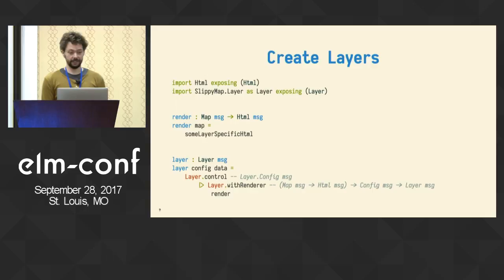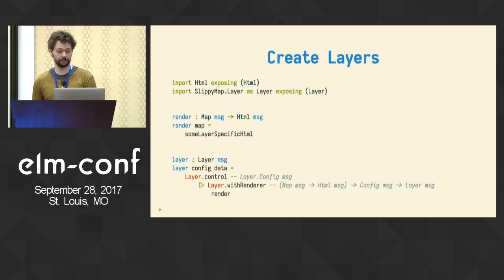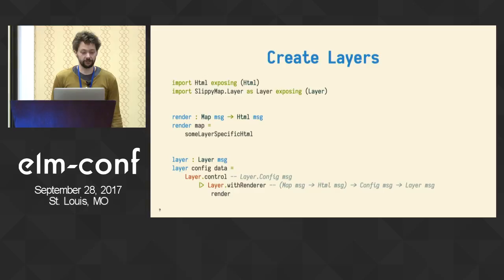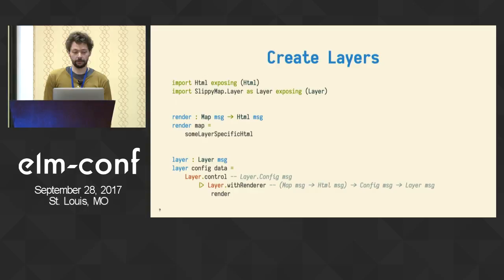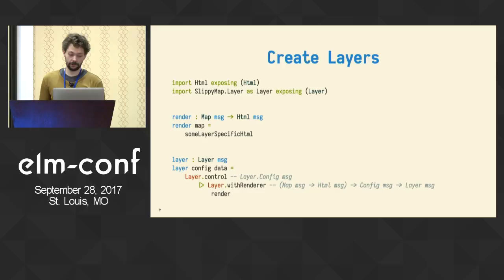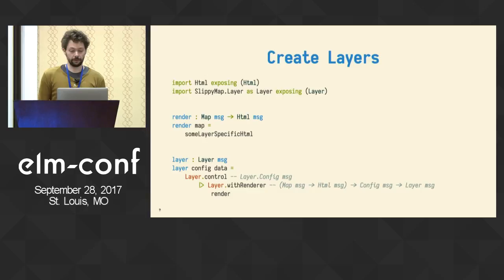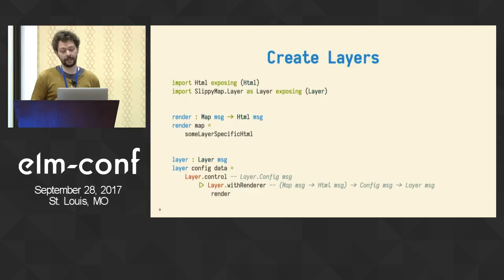Usually you just write a render function — it expects a Map and returns HTML, and you return some HTML in there. I'll show you different layer examples to make this clear. When you create a layer, you start with a layer config, which says on which pane you want the layer to show. In this case we're creating a control layer that's always on top. You give it the render function and then you have a layer. The main view function goes through the list of layers you've provided, sorts them by pane, and creates one Map value for every layer so that all layers have access to the same data at the same time.